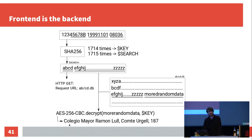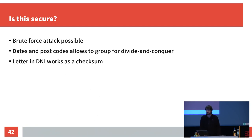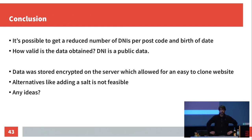Is this secure? You can do brute force, because it's just a hash — you can start trying hashes to find the answer. Since you have postcodes and birth dates, you can group this in a divide-and-conquer approach. As the letter is a checksum, you can't recalculate the correct ID directly, but you can recalculate 45 possible IDs. Some IDs might look obviously strange and can be ignored, giving you a reduced number of IDs to brute-force for one postcode and one birth date.